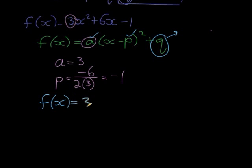We have that a is equal to 3, p is equal to negative 1. Now be careful, there's a negative p. So if we substitute a negative 1, it becomes positive. Negative times negative is positive 1 squared plus q is now the unknown.